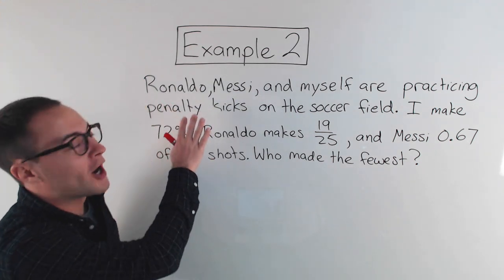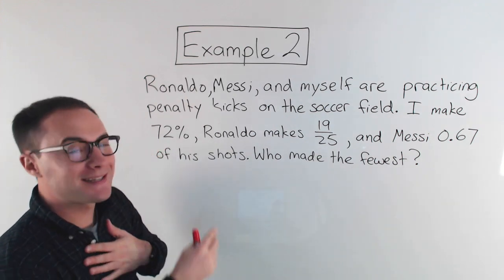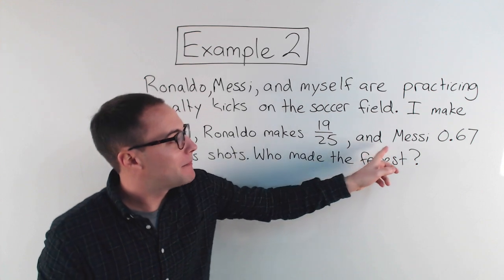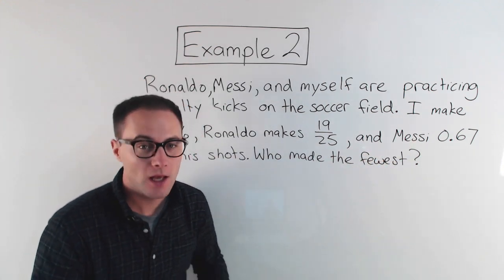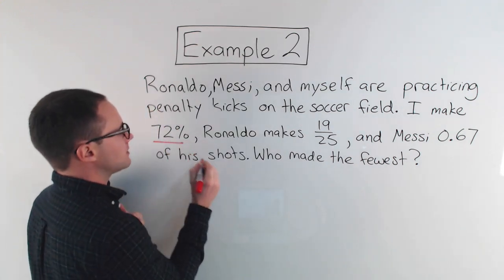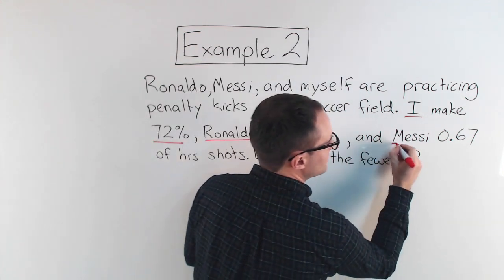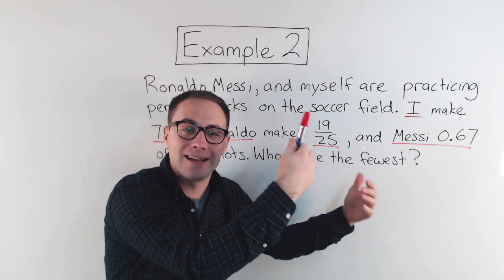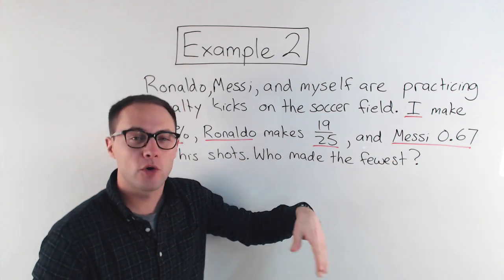Example two: Ronaldo, Messi, and myself are practicing penalty kicks on the soccer field. I make seventy-two percent of my shots. Ronaldo makes nineteen out of twenty-five of his, and Messi makes zero point six seven of his shots. Who made the fewest? Let's underline the important information: I make seventy-two percent, Ronaldo nineteen out of twenty-five, and Messi zero point six seven. We've got a percent, a fraction, and a decimal — we're going to have to compare all three.